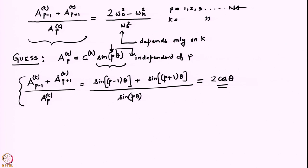We wrote the equations in a kind of variable separable form. There are two indices p and k. The left hand side depends on both k and p, whereas the right hand side depends only on k. So that implies that although a_{p,k} would depend on both p and k, this particular ratio would be independent of p. With that in mind, we made a guess for the solution — not completely arbitrary, but with the boundary conditions in mind, which is why we chose sin(p·θ). We also checked that sin(p·θ), when substituted into this ratio, is independent of p.